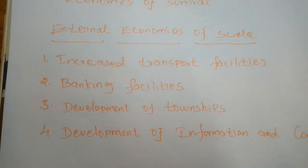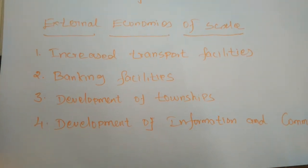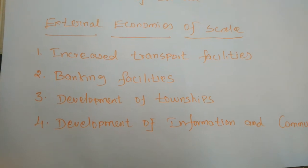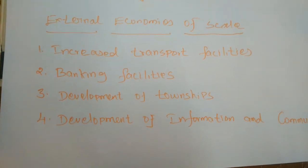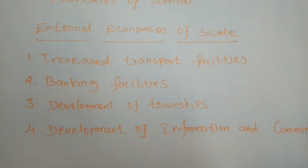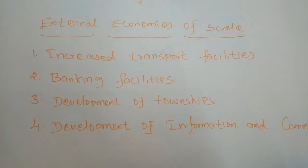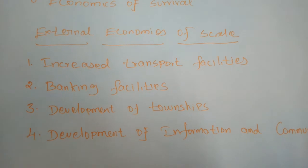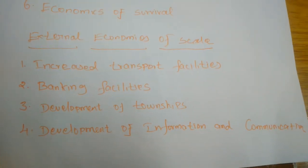Some important external economies of scale are as follows. First is increased transport facilities. For example, the nuclear power project at Kudangulam — once upon a time there were no transport facilities there, but after the nuclear power project was established, transport facilities increased. Some business organizations also provide their own transport facilities for their workers and members. When transport facilities increase because of the establishment of industries, that is one of the external economy advantages.